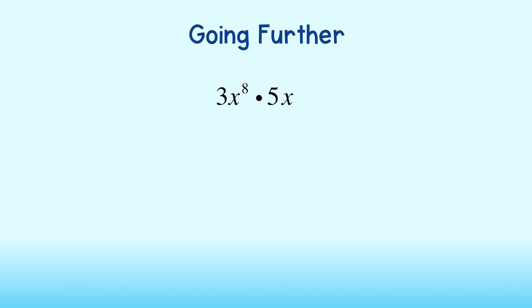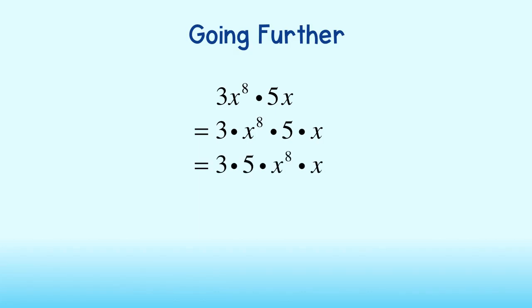Sometimes we will have to rearrange an expression before applying any of our rules. For instance, take the following monomial. We can rewrite this as 3 times x to the 8th times 5 times x. The commutative property allows us to rearrange the order that we multiply, bringing the 3 and 5 together and then the variables together. 3 times 5 is equal to 15. Next, we can apply the product rule to simplify x to the 8th times x. Notice there is no exponent shown — when this is the case, the exponent is understood to be 1, so just jot a 1 in for the exponent. Now we can apply the product rule by adding the exponents. Completely simplified, we get 15x to the 9th power.